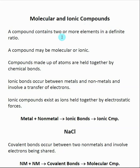A compound can be molecular or ionic, and we're going to find out that the primary difference between these two is the types of bonds that occur inside. As we go along with this course, we will talk about what differences inside the molecules cause something to be molecular or ionic. Compounds are made up of atoms held together by chemical bonds, and that's really the main difference — the type of bonds inside.